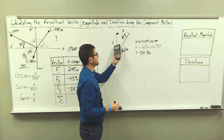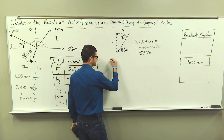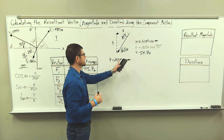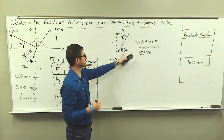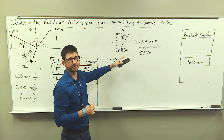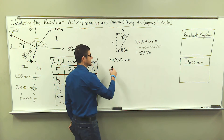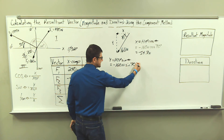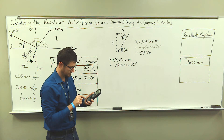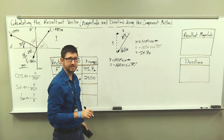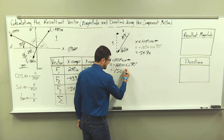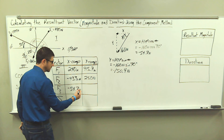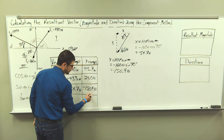For the y component, this is the hypotenuse times sine of angle theta. Our hypotenuse is 160 newtons. We're going in a negative y direction, so negative 160 newtons times sine of 70 degrees gives me negative 150.4 newtons. Let's transfer this calculated value into the table — negative 150.4 newtons.